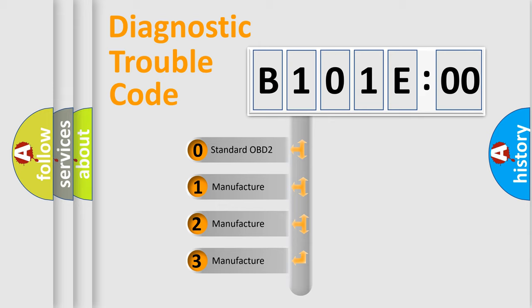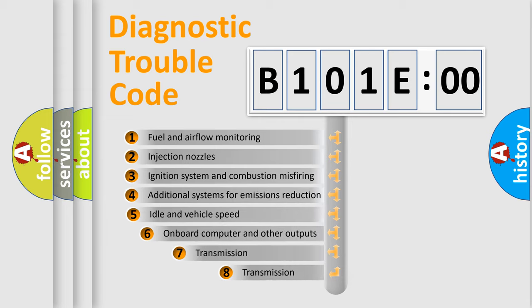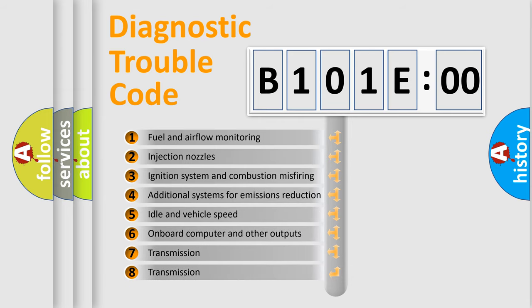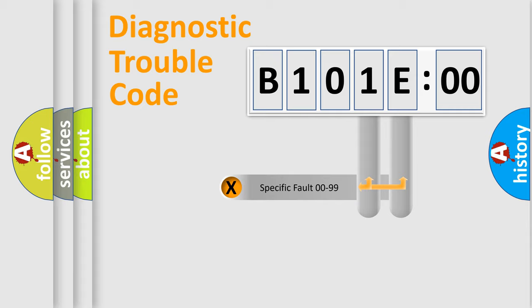If the second character is expressed as zero, it is a standardized error. In the case of numbers 1, 2, or 3, it is a more precise expression of the car-specific error. The third character specifies a subset of errors. The distribution shown is valid only for the standardized DTC code. Only the last two characters define the specific fault of the group.